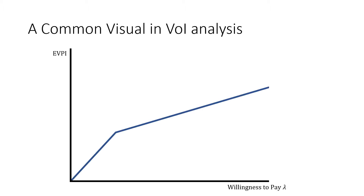A common visual in value of information analysis is where we have our expected value of perfect information plotted on our vertical axis and our willingness-to-pay threshold along our horizontal axis. In our first video we saw that this was a straight line, but often we'll see that sometimes there will be a kink. We want to address the question: why is there a kink there?